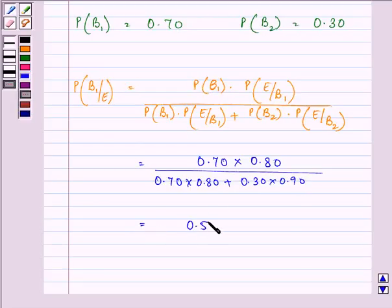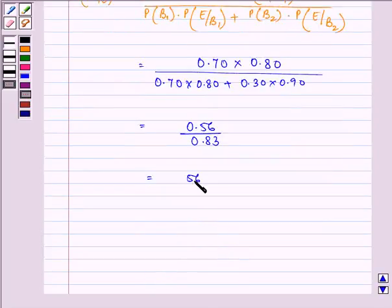On simplifying, we have 0.56 upon 0.83 which is further equal to 56 upon 83. So, this is the required answer to the given question.